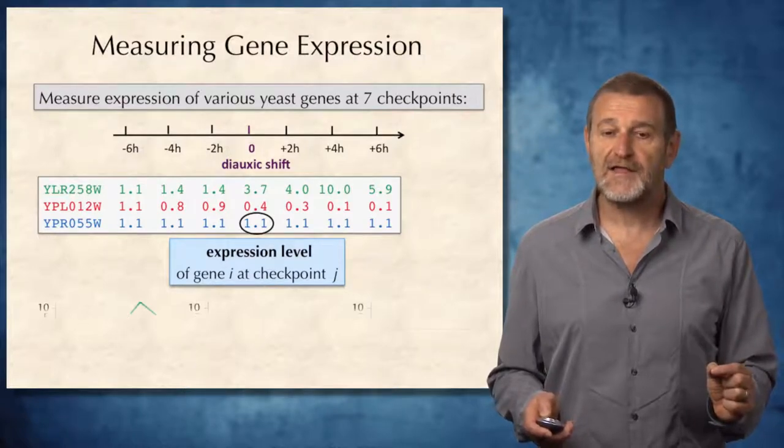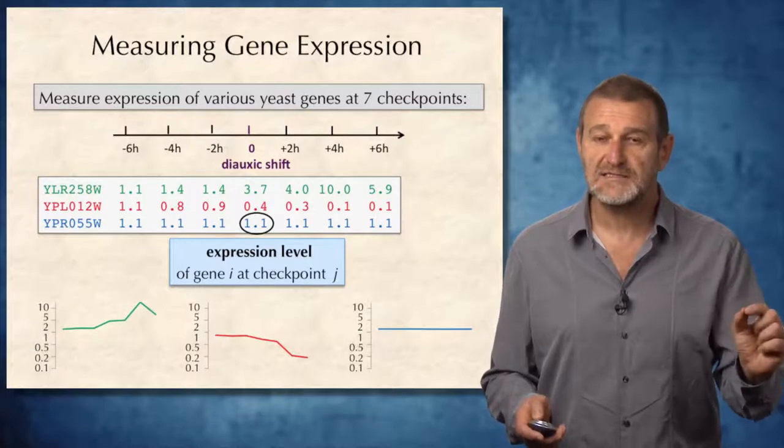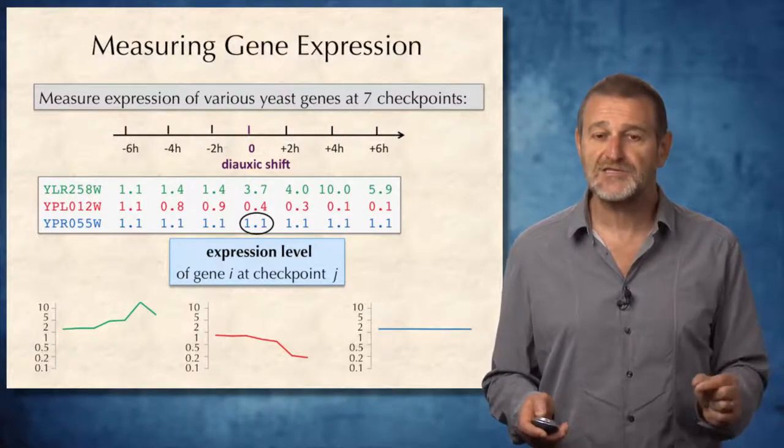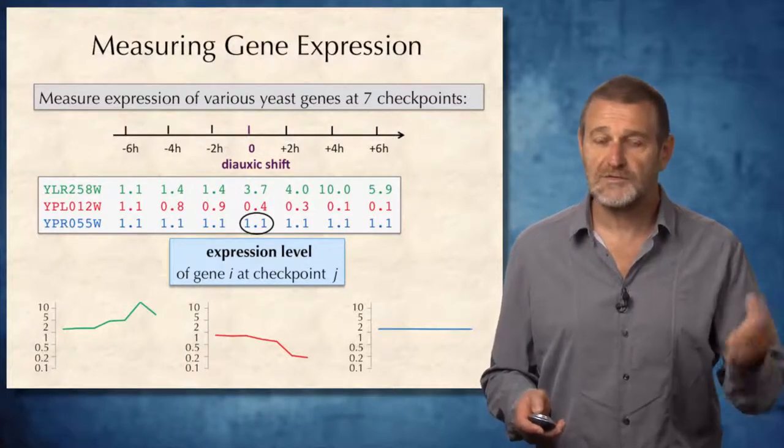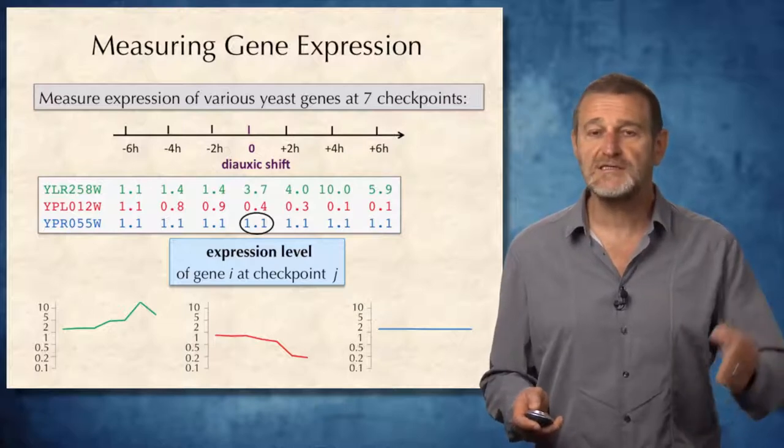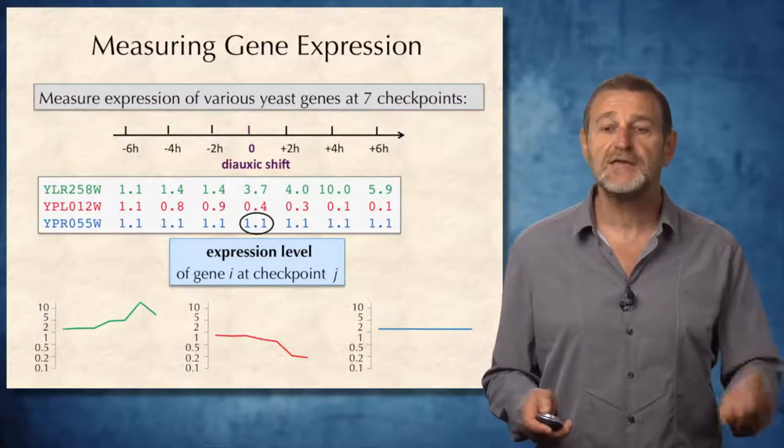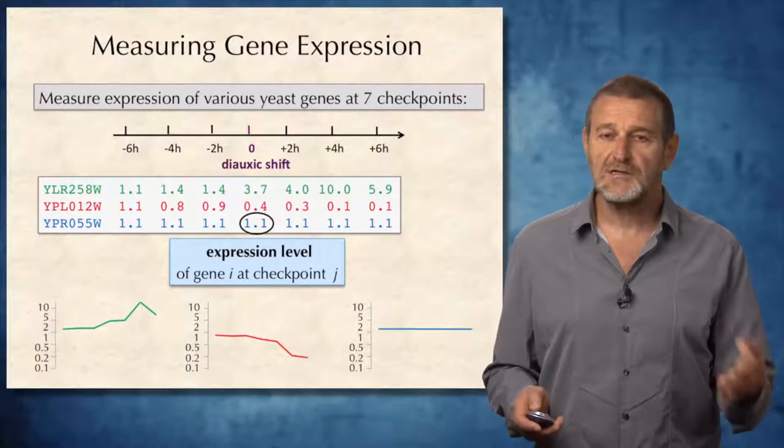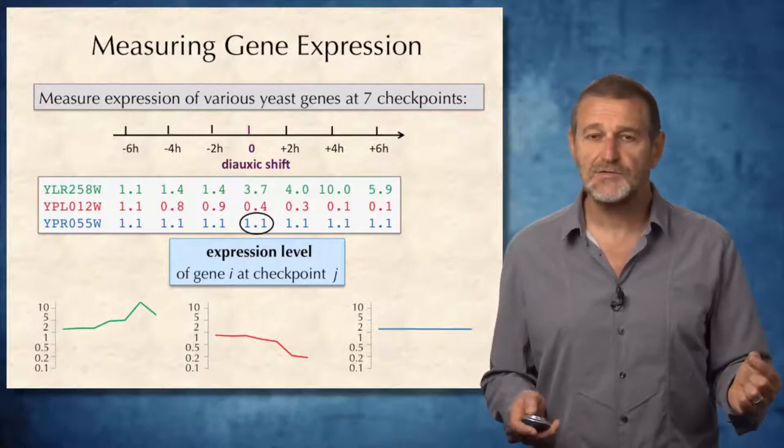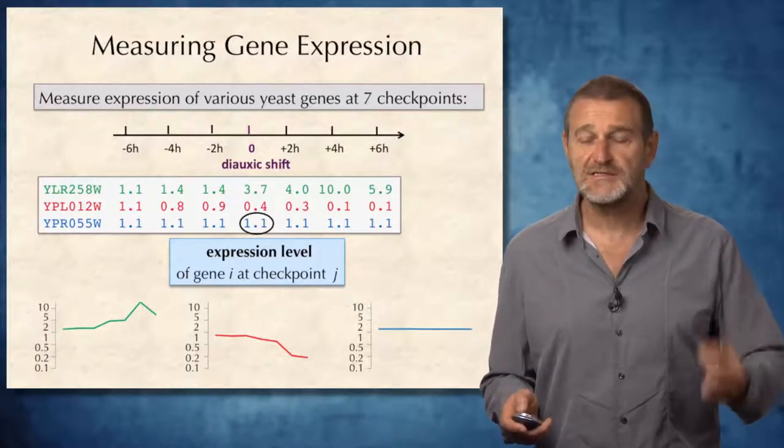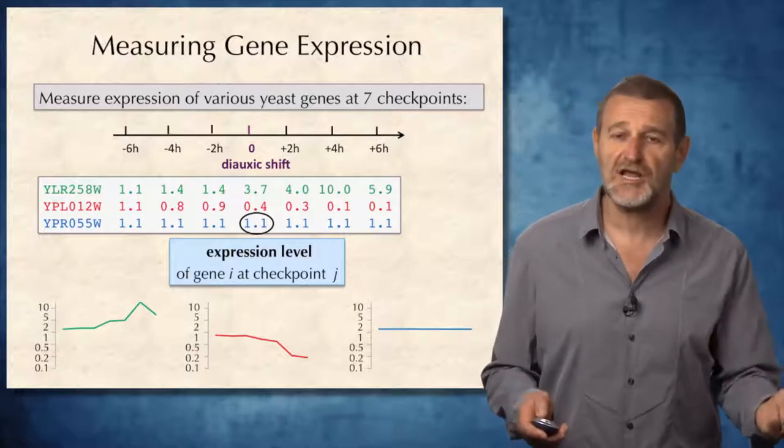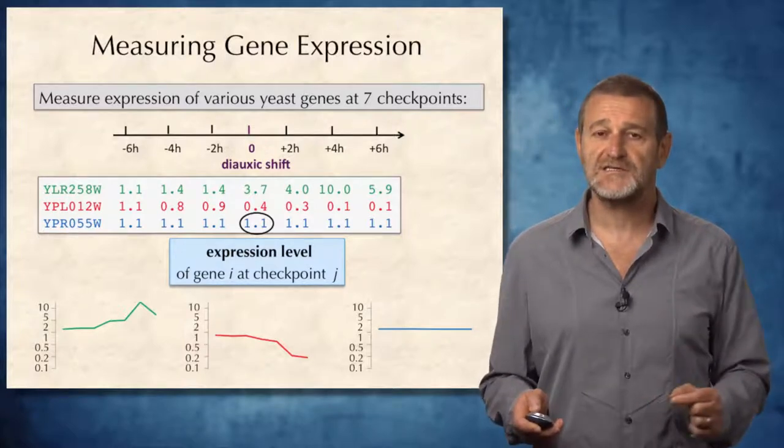We can visualize this 7-dimensional expression vector as a plot on seven points. Looking at this plot, you can immediately say that the blue gene most likely has nothing to do with the diauxic shift because the expression of this gene doesn't change before and after the diauxic shift.